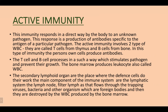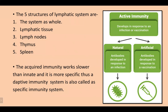The secondary lymphoid organs are the places where different cells do their work, such as B cells or T cells. The main components of the immune system include the lymphatic system and lymph nodes, which filter lymph as it flows through, trapping viruses, bacteria, and other foreign bodies. These are then destroyed by white blood cells produced by the bone marrow. The five structures of the lymphatic system are the system as a whole, lymphatic tissues, lymph nodes, thymus, and spleen.